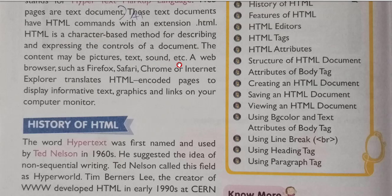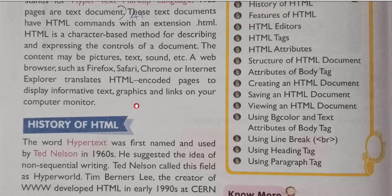In any web page you can see pictures, text, audio, video — everything is there, and all of that is made using HTML language. A web browser such as Firefox, Safari, Chrome, or Internet Explorer translates HTML-encoded pages to display informative text, graphics, and links on your computer monitor. These browsers are responsible for displaying your data on the screen.